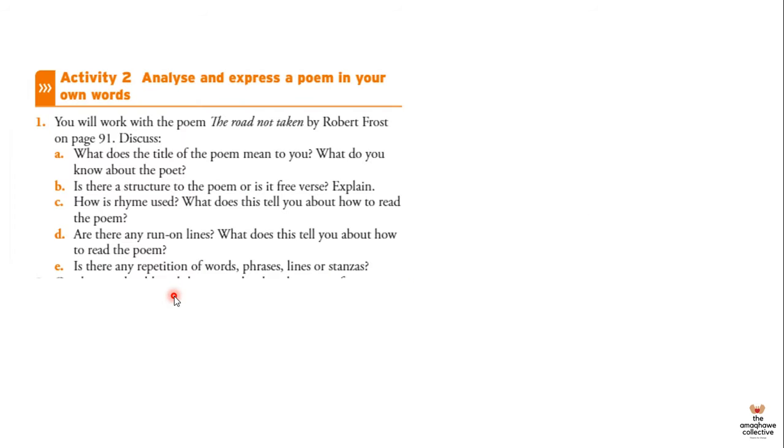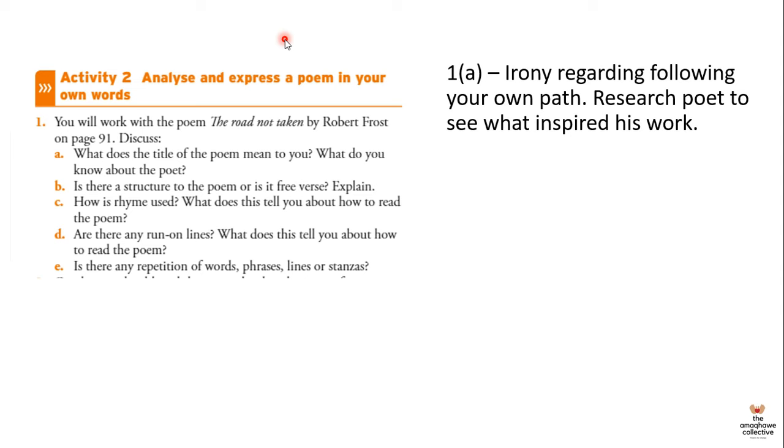So let's look at an activity. It's activity two if you are using this textbook. So it says that you will work with a poem, The Road Not Taken by Robert Frost, and it has some questions that it requires you to discuss. So the first question is, what does the title of the poem mean to you, and what do you know about the poet? So it's up to you to go and research the poet rather, and what type of things influence the way that Robert Frost has written. But basically, the poem, The Road Not Taken, it speaks about the irony of following your own path. It basically just speaks about the irony of following your own path. And as I sort of asked you to please go and research the poet to sort of see what sort of things influence his work.